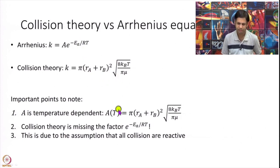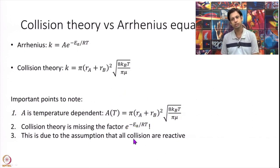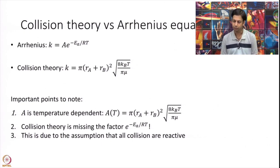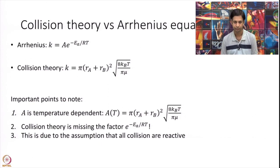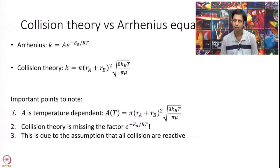What we notice is that A is temperature dependent — A depends as the square root of T — and we are missing the e to the power of minus E_a over RT. What we will show today is that the reason we miss this exponential factor is because so far we have assumed that all collisions are reactive: every time A and B collide, you get a reaction. Today we are going to go beyond that approximation.